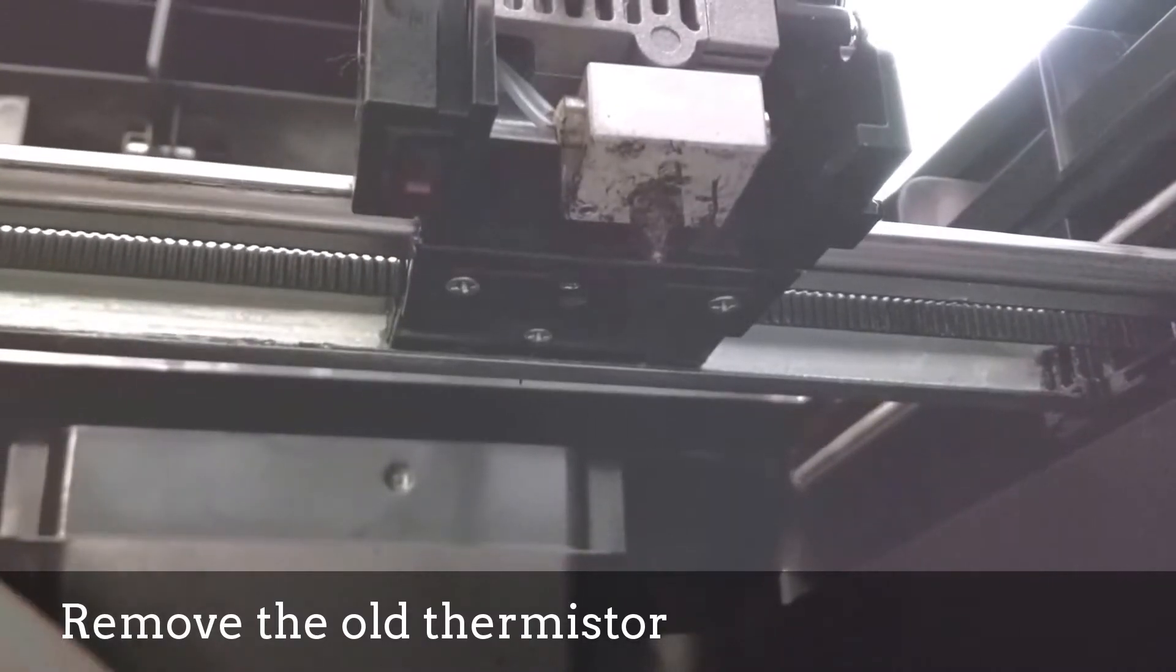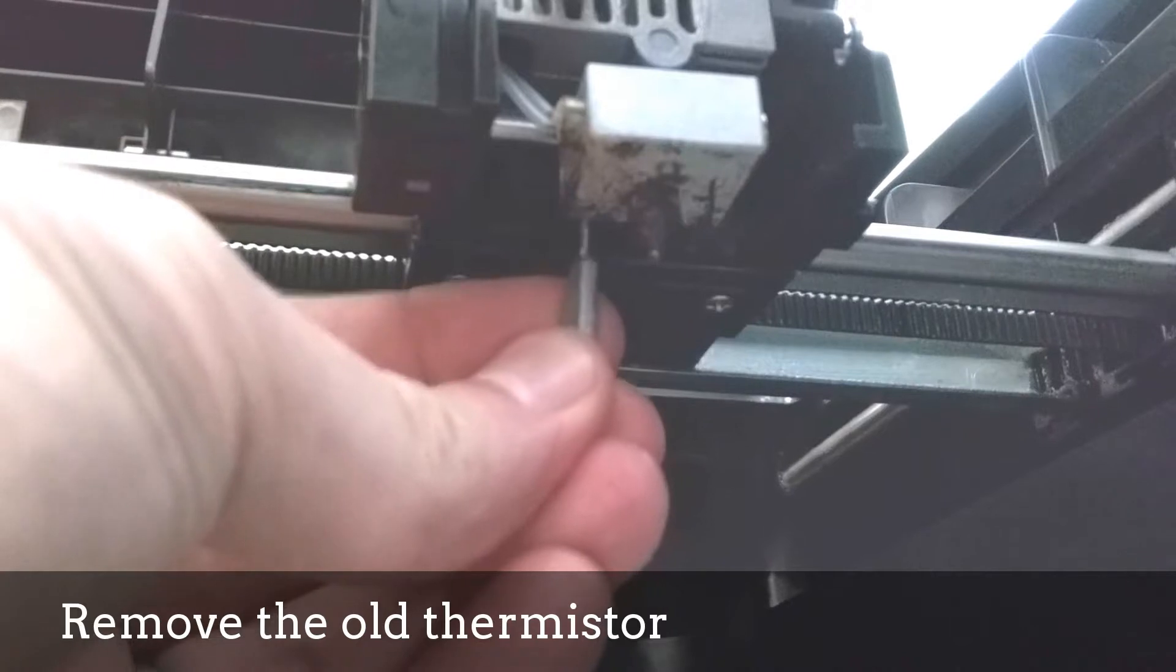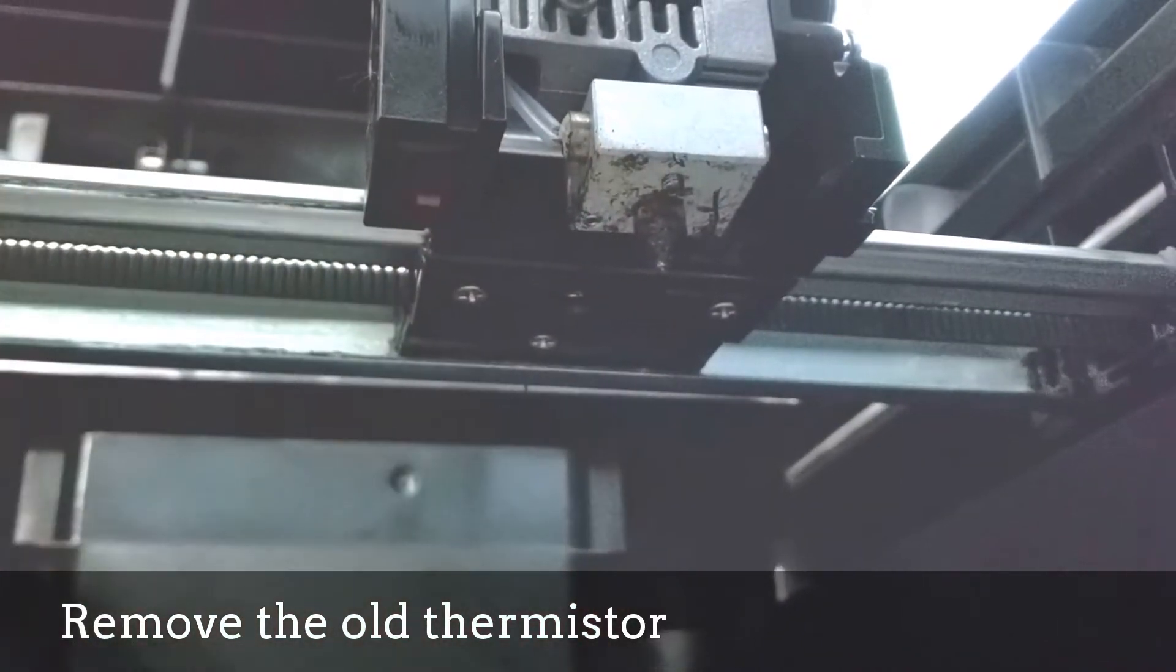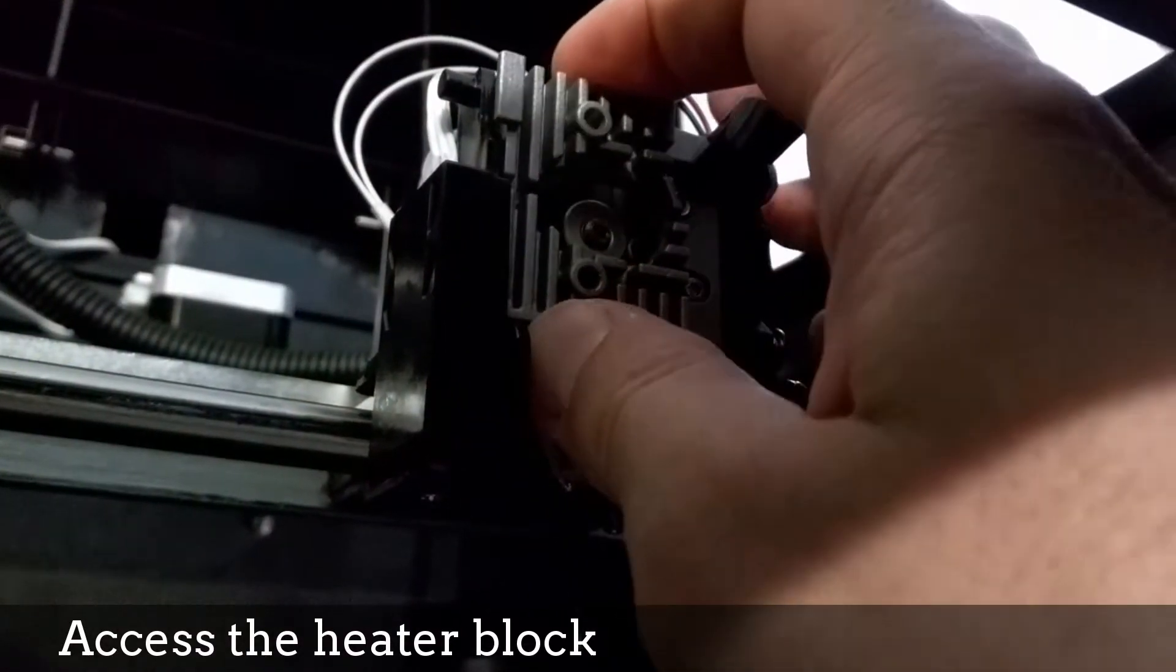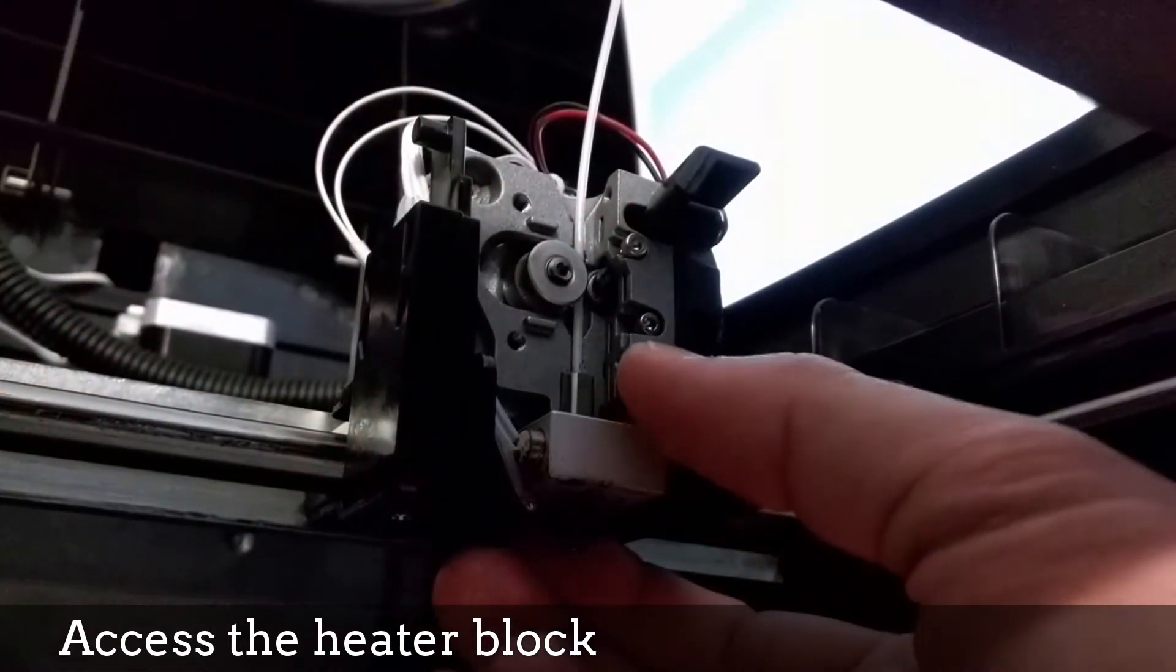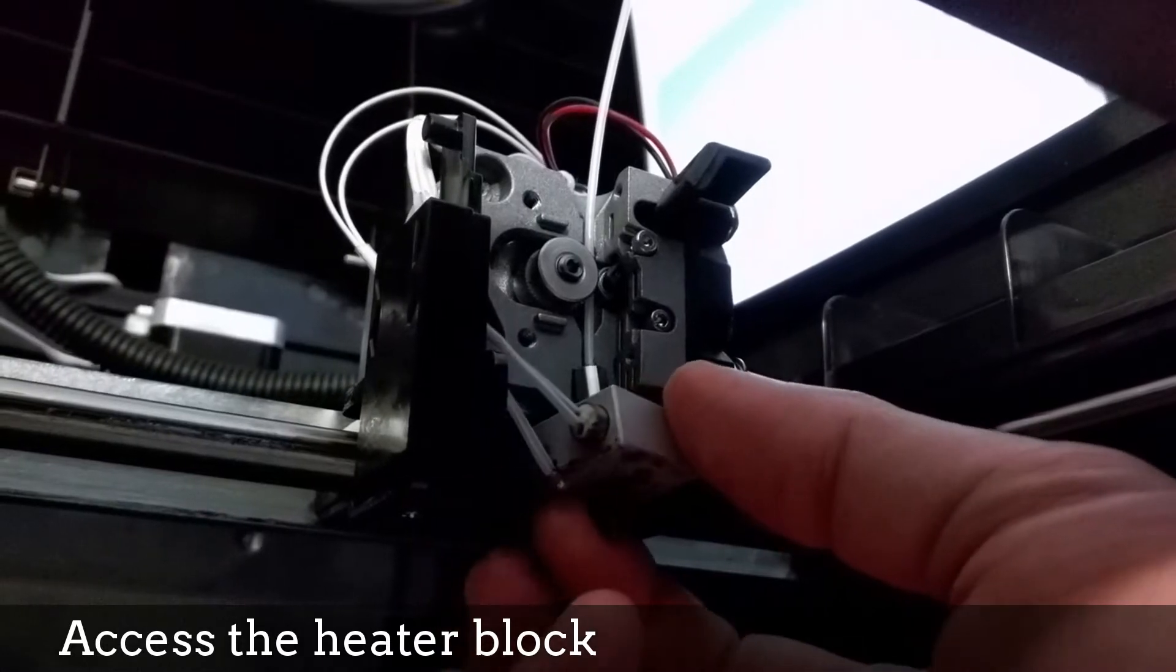Make sure you loosen the correct set screw, and that's the one right back here in the corner. It's gonna be much easier if you take off this front piece and then manually insert the thermistor into the hole so you don't risk breaking anything.